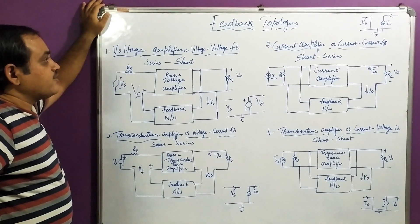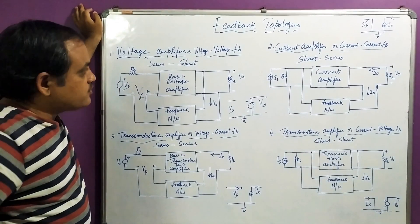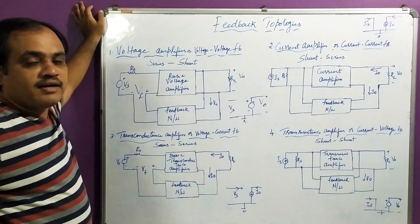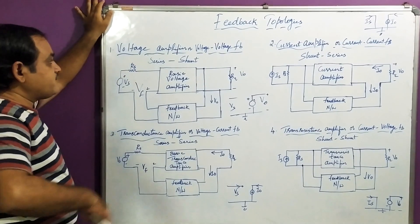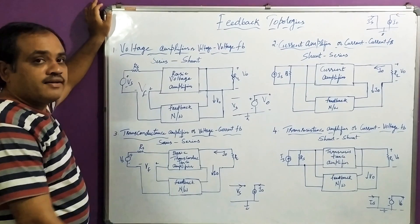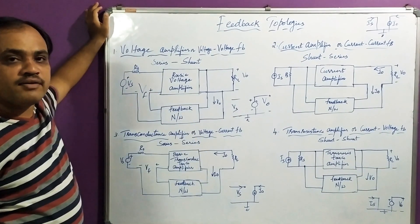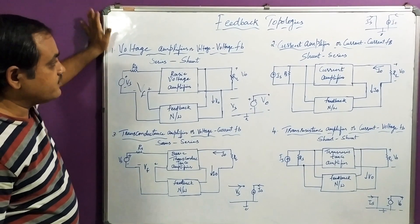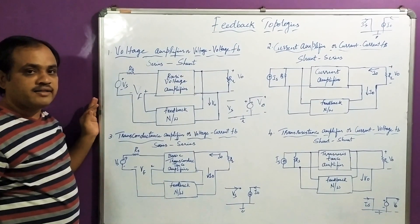There are four basic feedback topologies. Topologies, in simple words, are different types of block diagram representations of a negative feedback structure. The classification is made purely based on two important things: one is the gain, and another is how and what type of inputs are going to get connected. Gain means voltage gain — that is output divided by input. In that regard we have four types of feedback topologies.